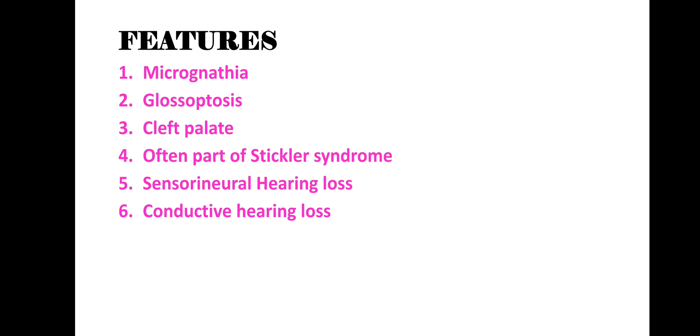Features of Pierre Robin syndrome include micrognathia, glossoptosis, and cleft palate. It is often part of Stickler syndrome. Additional features include sensorineural hearing loss and conductive hearing loss.